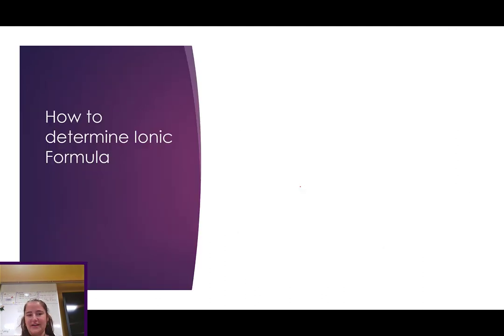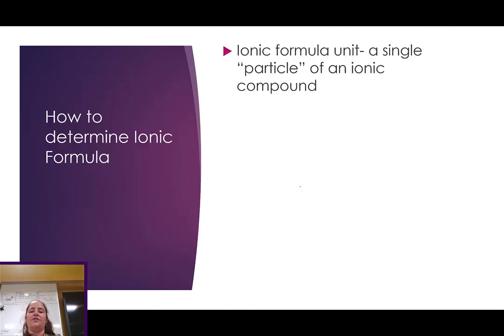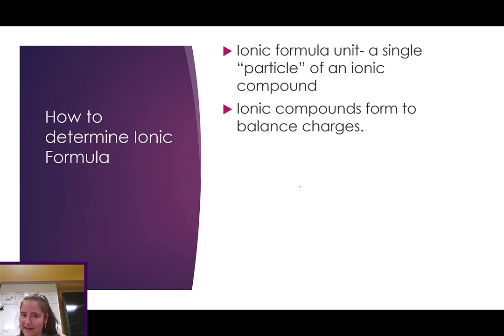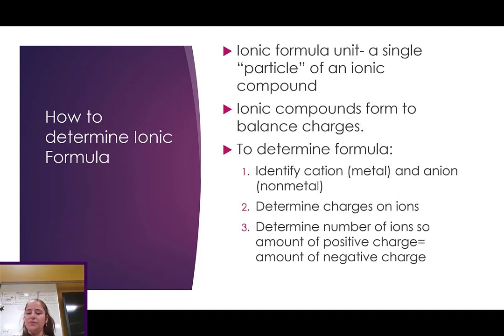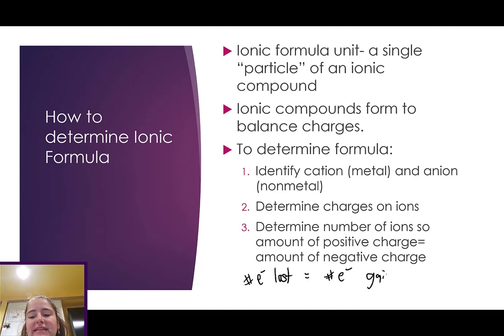Let's see how this looks. How we determine an ionic formula is basically we're looking for the single particle of an ionic compound. And we form that by balancing the charges of the ions that make it up. So, whenever we have one of these problems, we're going to identify the cation. That's going to be the metal, the positive one. And the anion. That's going to be the sad onion anion, the negative one. We're going to determine those charges on the ions. And then balance the number of ions so that the amount of positive charge, the number of electrons lost, equals the amount of negative charge, the number of electrons gained. Positive charge equals negative charge. You can also think of that as numbers of electrons lost equals the number of electrons gained.